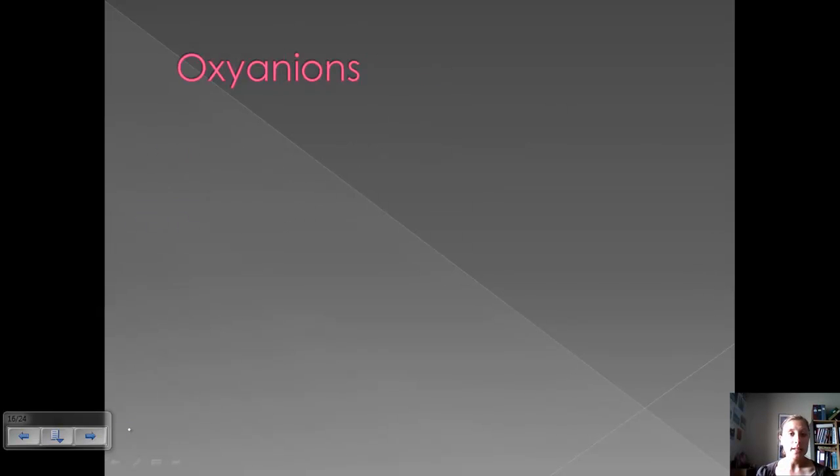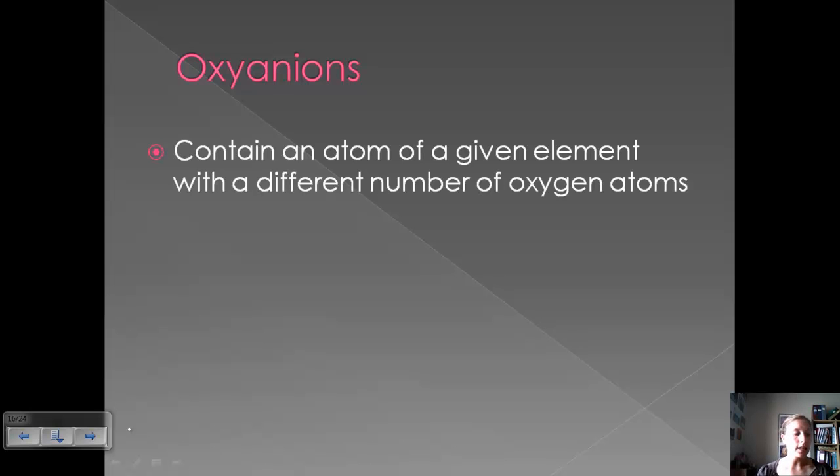The main group of polyatomics that we're going to work with are called oxyanions. And so oxyanions contain an atom of a given element with a different number of oxygen atoms. So it could be like sulfur combined with oxygen or chlorine combined with oxygen. And you can have different numbers of oxygen atoms in these polyatomics.